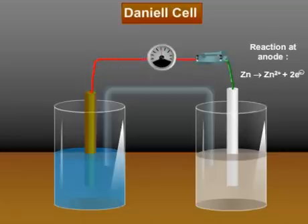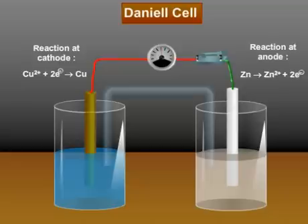So, copper electrode acts as a cathode. And here is the reaction that takes place at the cathode.